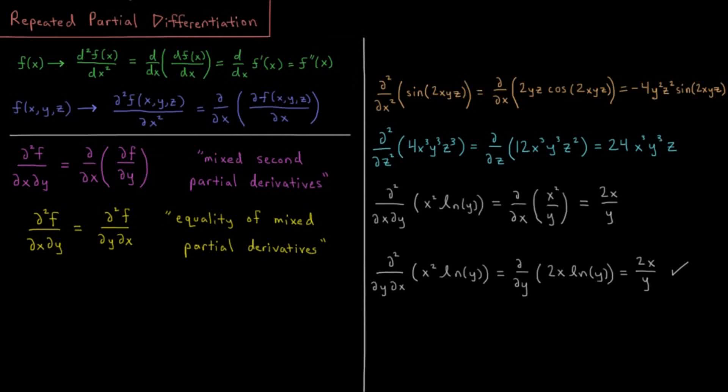This video is a review of repeated partial differentiation. In going from one dimension to a function of multiple dimensions, in one dimension we had f, and if we wanted to take the second derivative of f with respect to x, then we just took the derivative and then took the derivative again. So it's like operating the derivative twice, follow whatever rules you need to use to take the derivative and do so twice, which is the derivative of f prime or what we sometimes call f double prime.